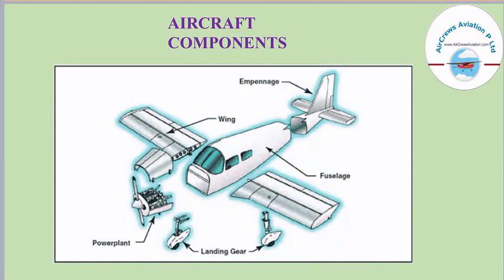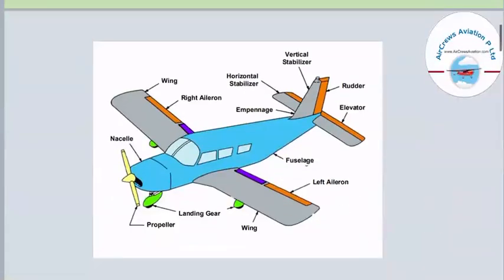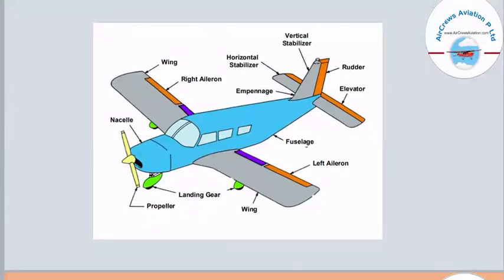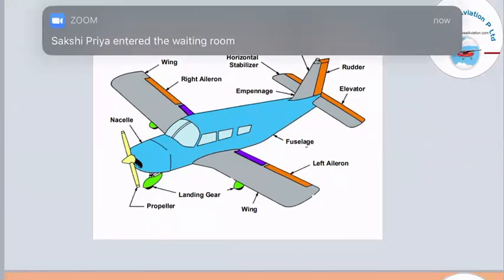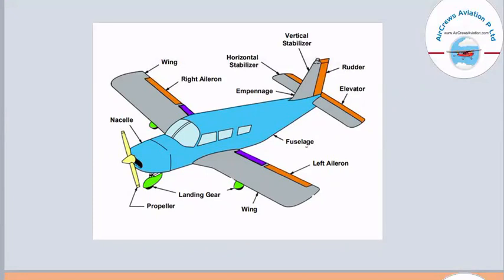Today we will look at how the internal structure of these components looks and what they are made of. Starting from the nose section, we have the nacelle and propeller, then the landing gear, the wing section connected to the fuselage, and the ailerons — both right and left. The empennage or tail section mainly consists of the vertical stabilizer and horizontal stabilizer, with elevators on the horizontal stabilizer and the rudder connected to the vertical stabilizer.